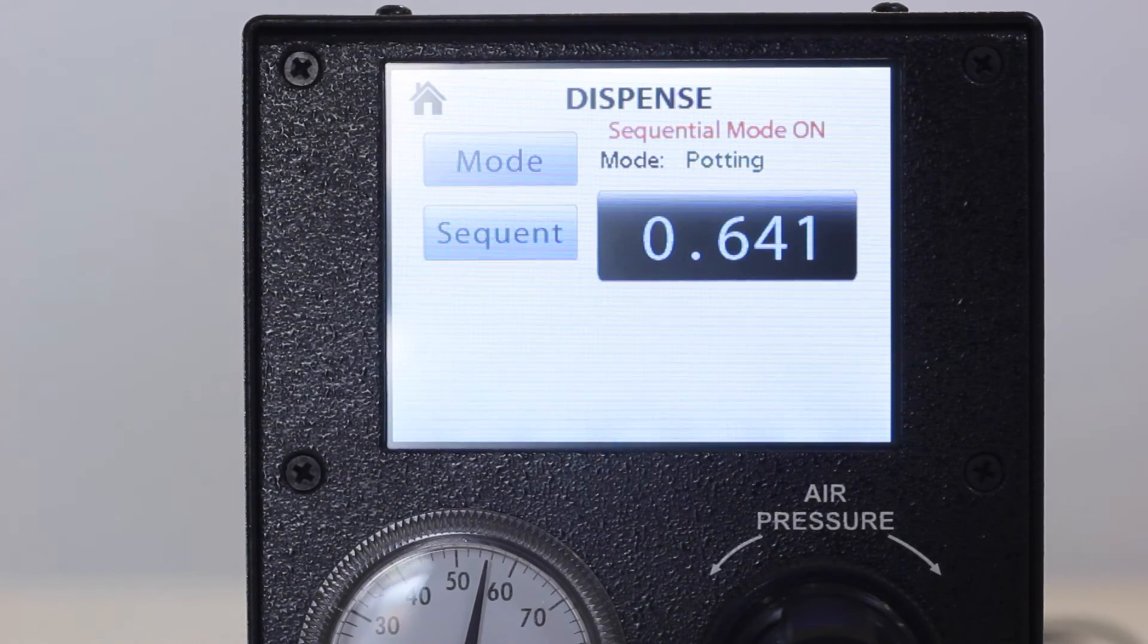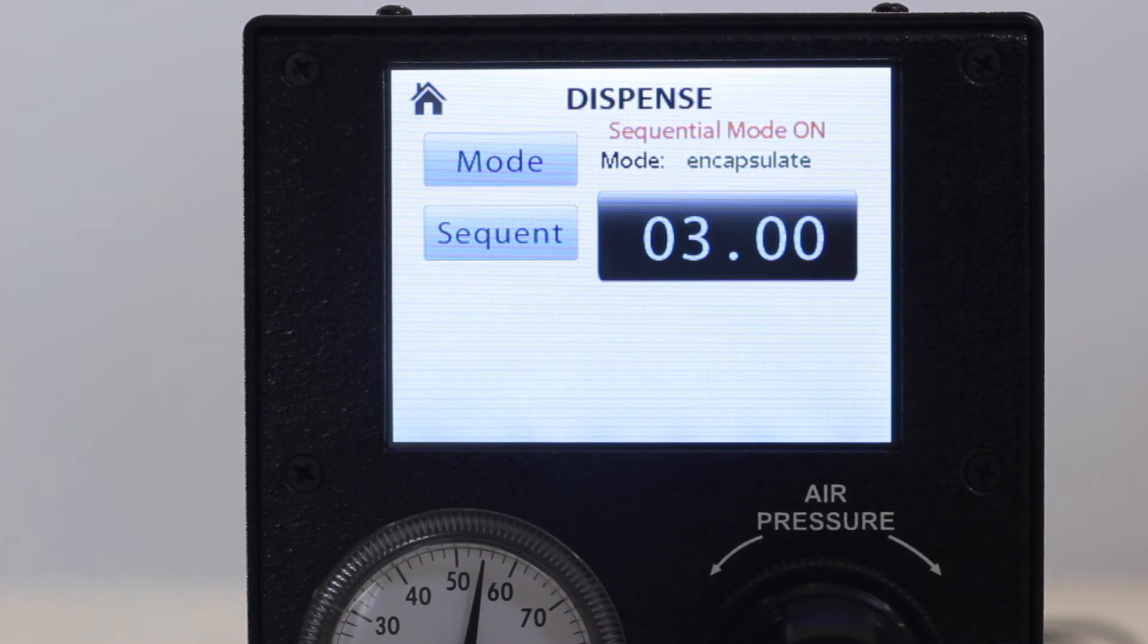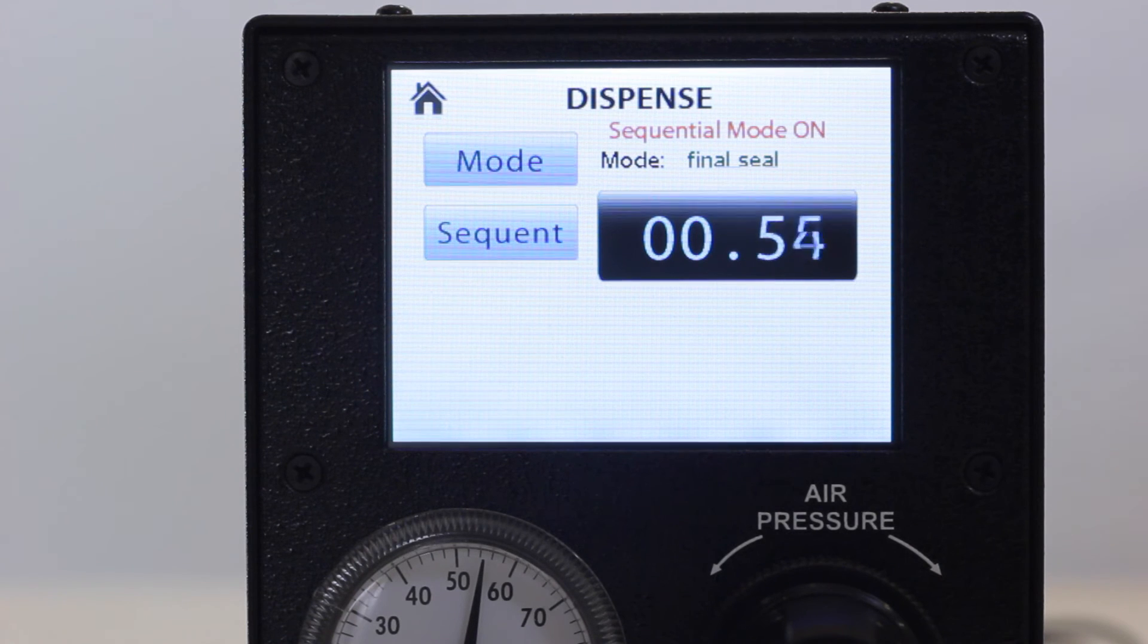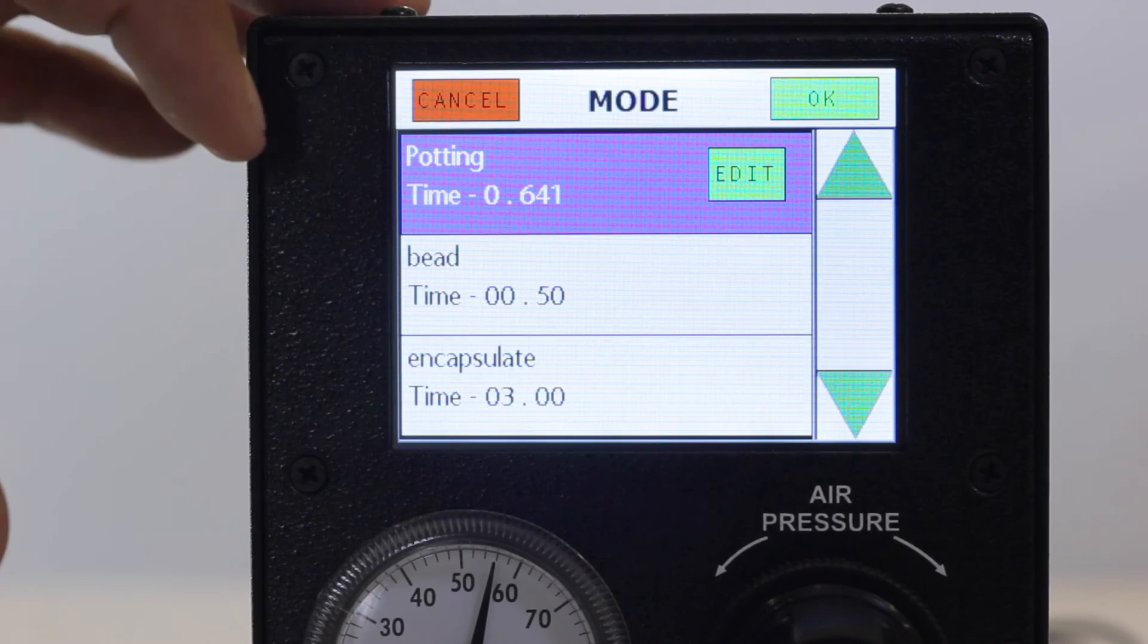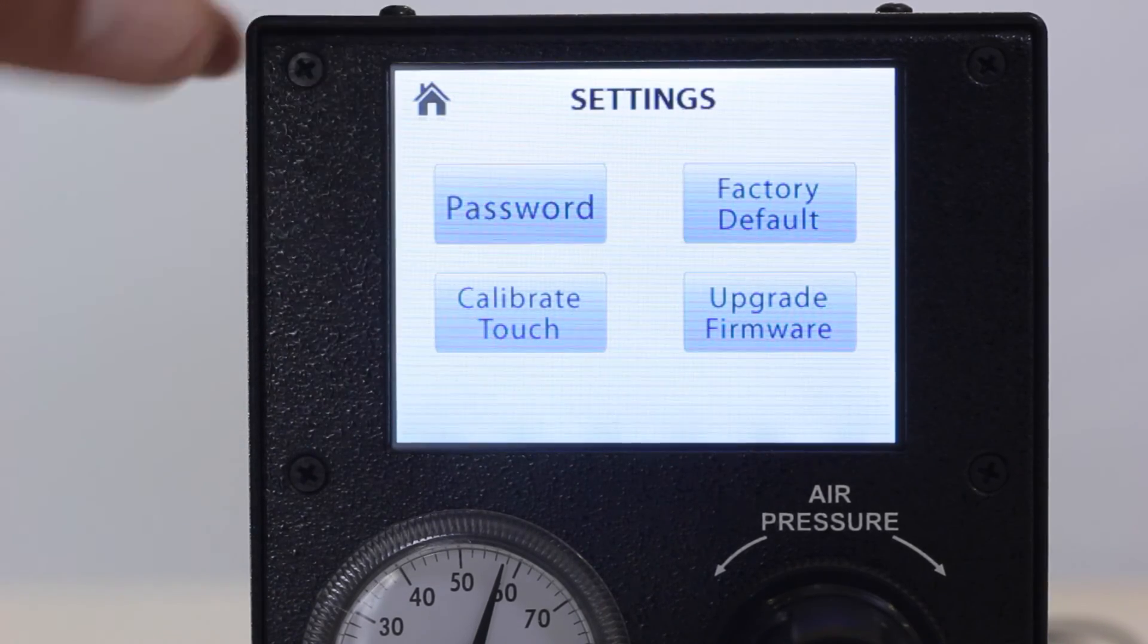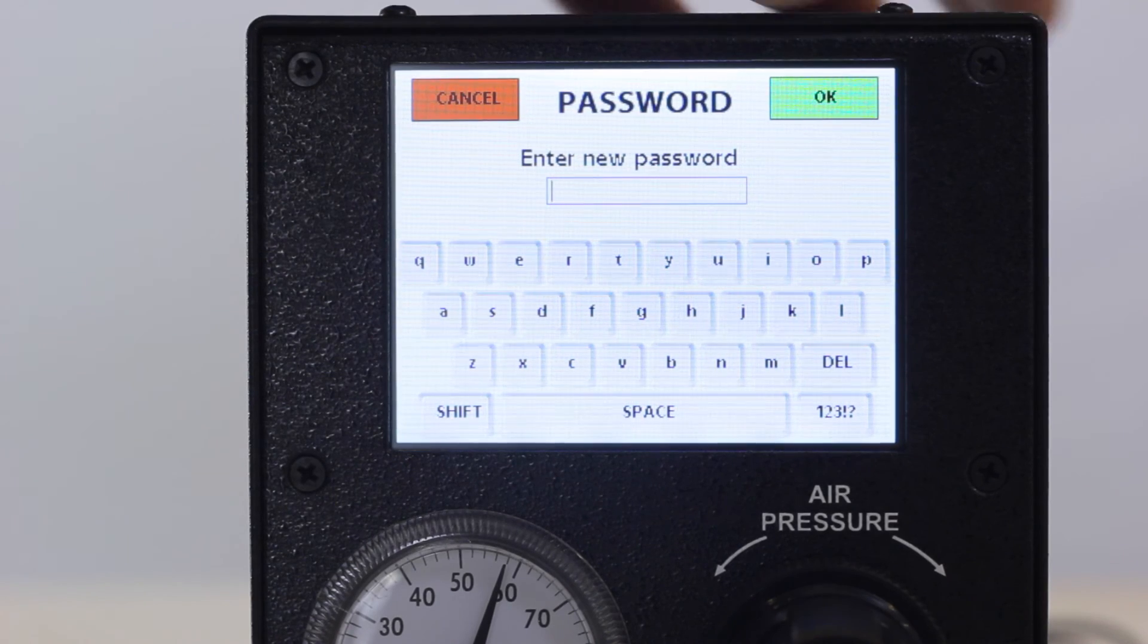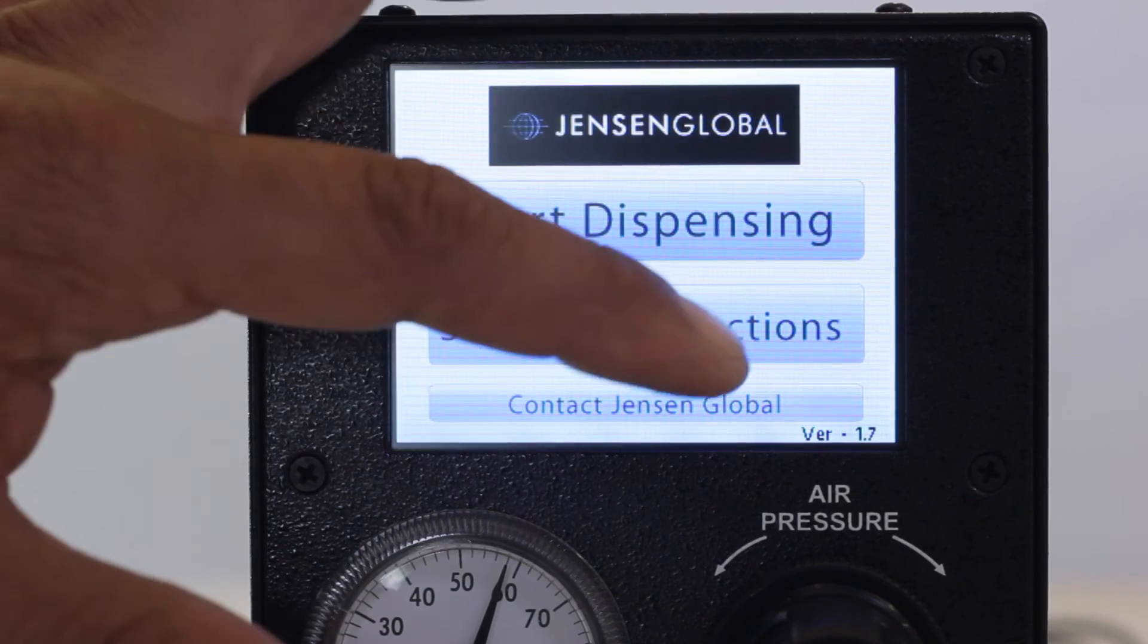The Sequent button allows you to continuously cycle through stored profiles. It is best used when an application requires different metered amounts of the same material. Once you initiate your first profile and release the foot pedal, it will cycle to the next stored profile. The profiles may be password protected. Many production facilities find this function useful to maintain process control so dispensing output is consistent.